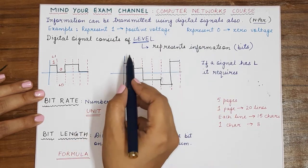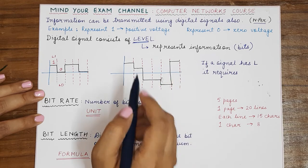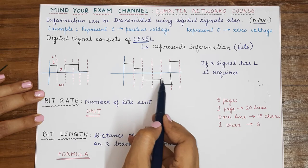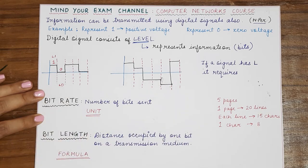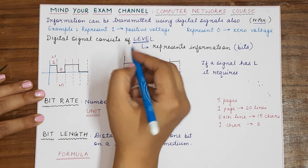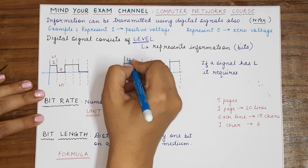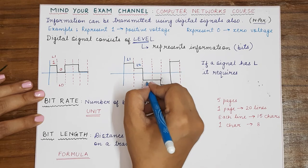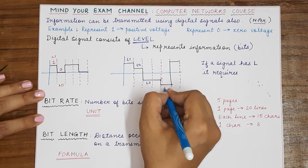So for example, this is another digital signal that consists of one, two, three, and four. So it consists of four different levels. This is level one, this is level two, this is level three, and this is level four.